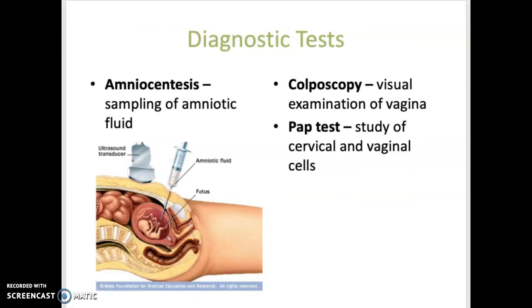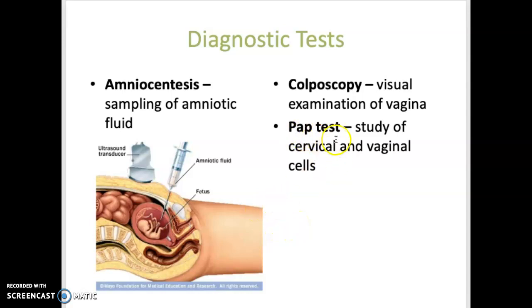Diagnostic tests include: amniocentesis, the puncture of the amniotic sac using a needle to remove amniotic fluid, done to determine if the fetus is developing normally and is genetically normal. Chorionic villus sampling is the sampling of placental tissue to diagnose potential genetic defects in a fetus. A colposcopy is a visual examination of the vagina and cervix. The pap test is a cellular study used to detect abnormal cells of the cervix or vagina.